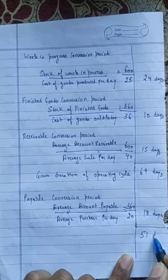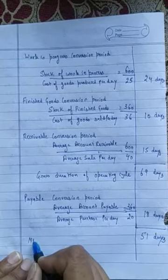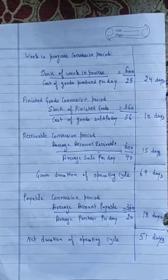From the gross duration of the operating cycle — 69 days — we subtract the payable conversion period of 18 days. So, 69 minus 18 gives 51 days as the net duration of the operating cycle. The duration of the operating cycle also determines your working capital requirement. A larger duration requires more working capital, and a smaller duration requires less working capital. In this way, you can calculate your net duration of the operating cycle.